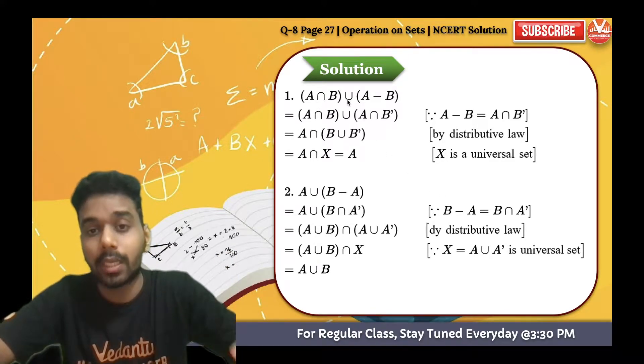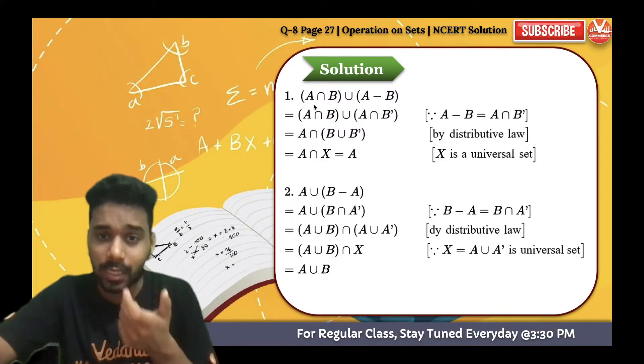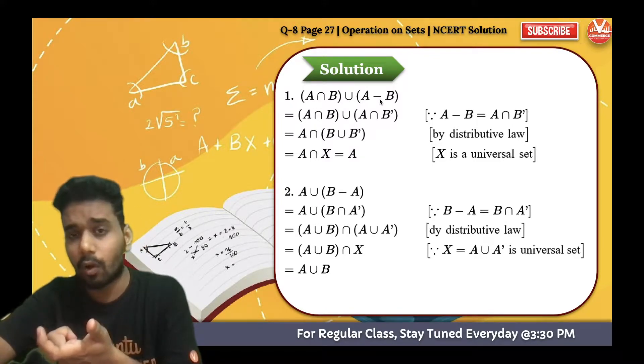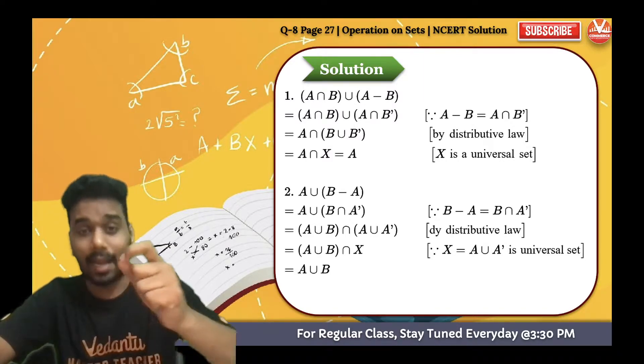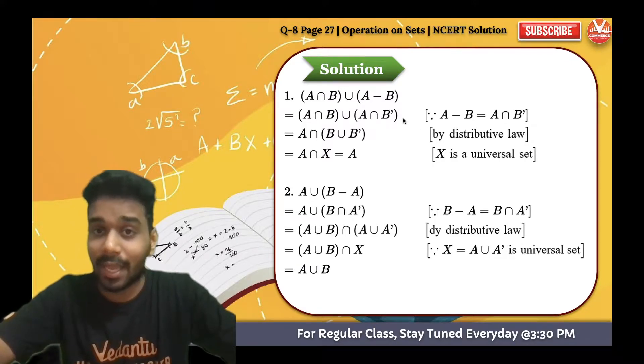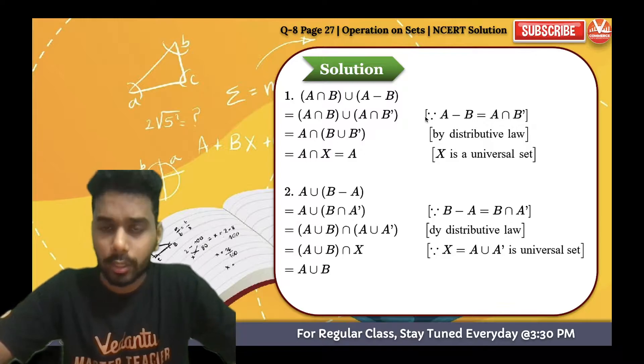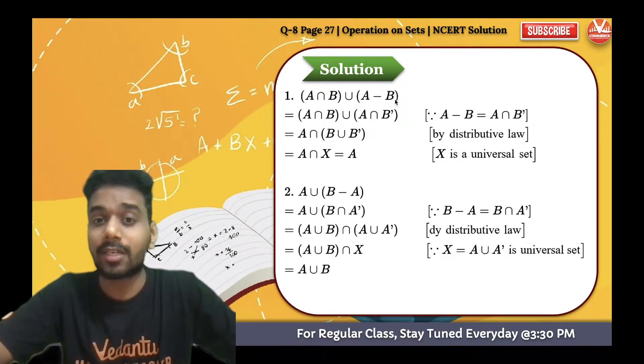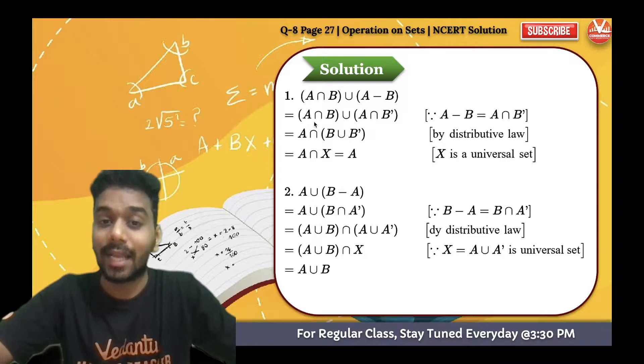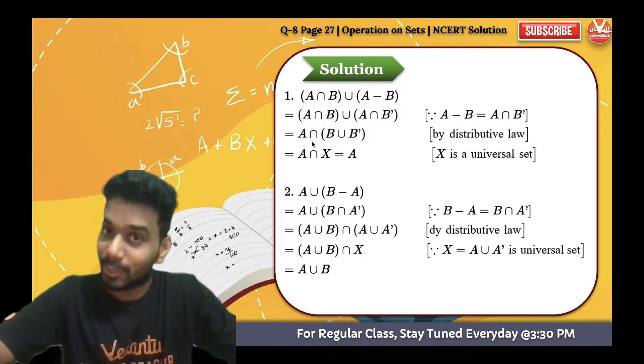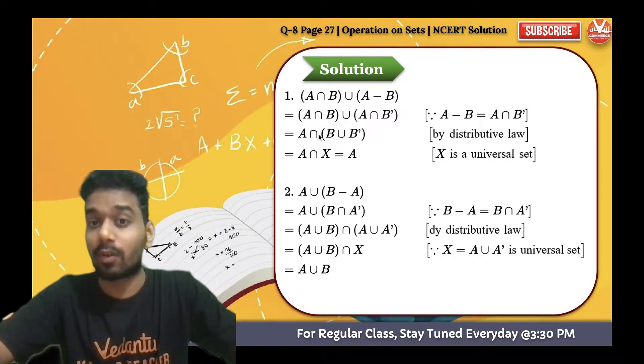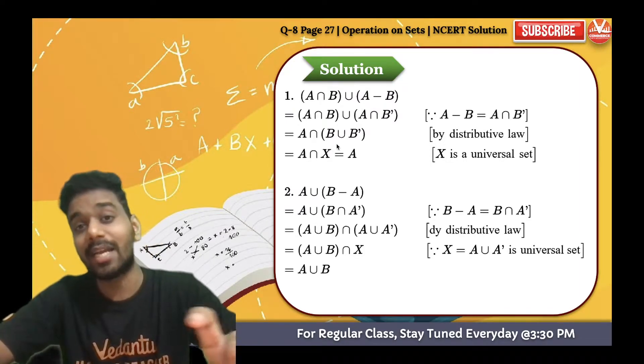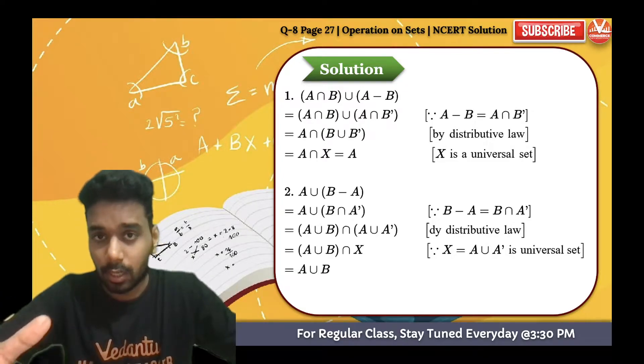The question is A intersection B union A minus B. Now you will see here A is a common part, and here it's B and this is minus B. So first of all, we are going to change it. A and A minus B is equals to A minus A intersection B, or you can think like this: A intersection B not. After changing this, now you can take A common. A intersection common, what will be left? B union B dash.